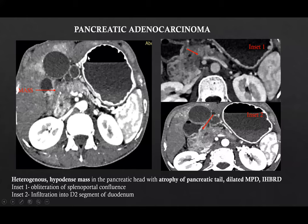Coming to the individual cases, this was a case of pancreatic adenocarcinoma. Here we can see a heterogeneous hypodense mass in the pancreatic head with atrophy of the pancreatic tail and a dilated MPD. There is associated IHBRD. In inset 1, we can see that there is obliteration of the splenoportal confluence, and in inset 2, we see that there is infiltration into the D2 segment of the duodenum.